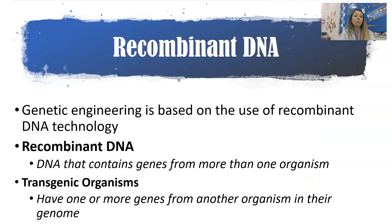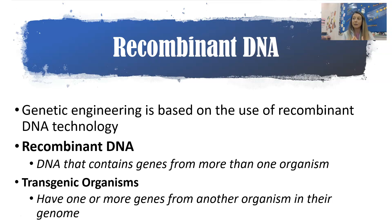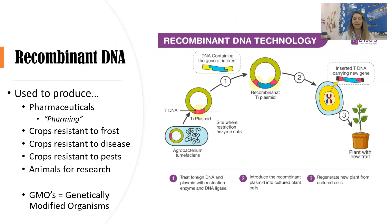Now let's talk about recombinant DNA. Genetic engineering is based on the use of recombinant DNA technology. Recombinant DNA is DNA that contains genes from more than one organism. If an organism has recombinant DNA inside it — meaning it has the DNA from another organism — we call those transgenic organisms. They have one or more genes from another organism in their genome.